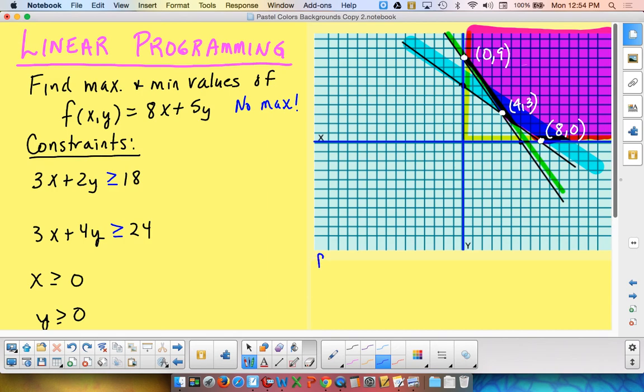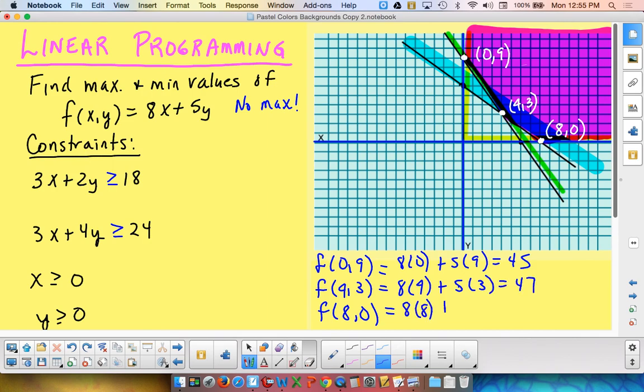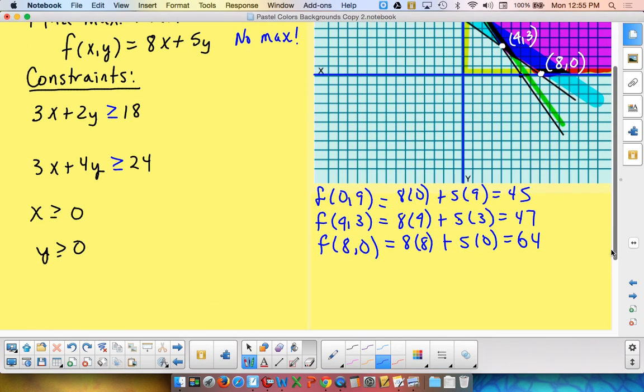So, to do that, we are going to sub our three coordinates. We do have zero, nine, four, three, and eight, zero. Notice, two of these three are different than what we did on the original one. We're going to sub them in the function. And so, if I do eight times zero plus five times nine, I'm going to have forty-five. I already know that eight times four plus five times three is going to give me forty-seven. And, eight times eight plus five times zero is going to give me sixty-four. In this case, though, I could only be looking for a minimum, not a maximum. So, I could figure out that this is minimized at the point zero, nine. So, as far as my final solution, I would say there's a minimum value of forty-five at the point zero, nine. And, that would be my only solution on this one, because it would be impossible to have a maximum, as it extends forever.